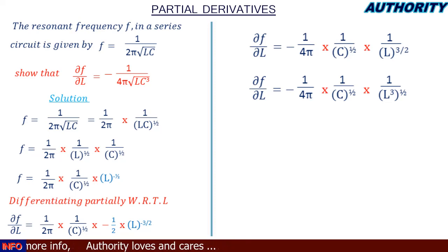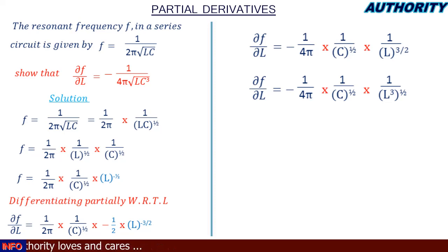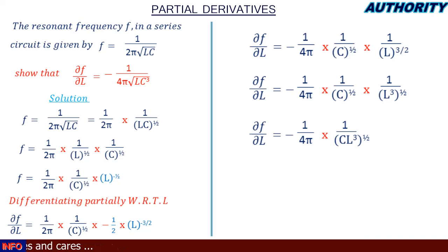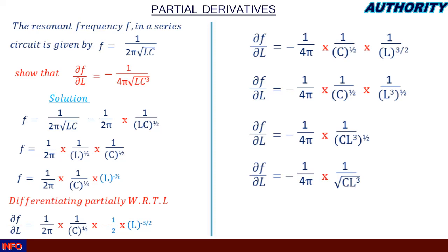Now C and L³ in the denominator have the same power of 1/2, so we can combine them: the partial derivative of f with respect to L equals −1 / (4π) × 1 / (CL³)^(1/2). Since raising to the power of 1/2 is the same as taking the square root, this becomes −1 / (4π√(CL³)).